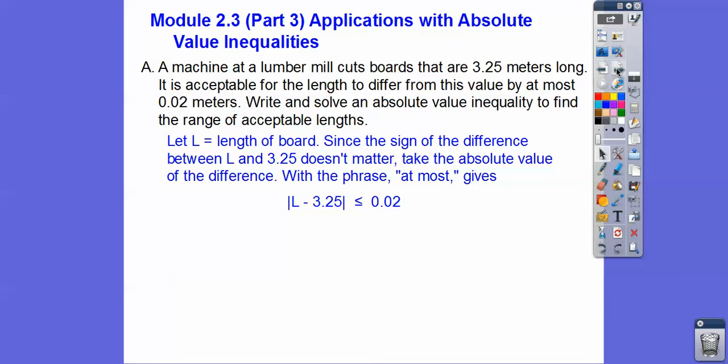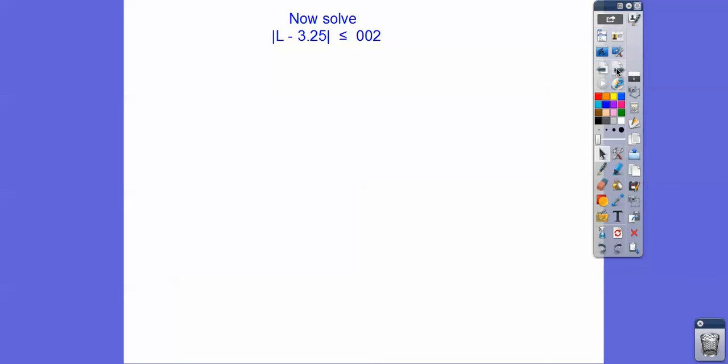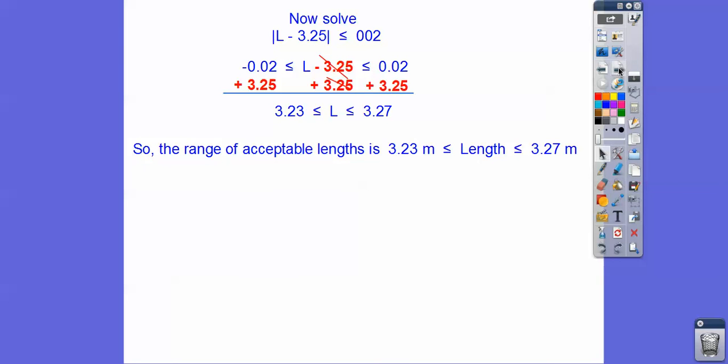We're going to solve this absolute value. When it's set up like this, we put the inside stuff within the negative and the positive. We just add 3.25 to both sides. So our acceptable lengths are going to be 3.23 meters to 3.27 meters.